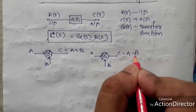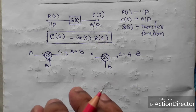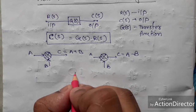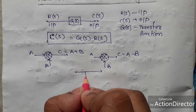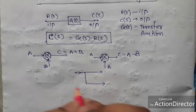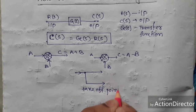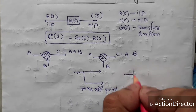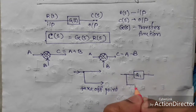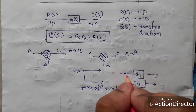Another concept is when one input source feeds two or more blocks. This is represented by a takeoff point. If one input goes to one block and we also want to give the same input to another block, this is represented by a branch, and this point is called the takeoff point.